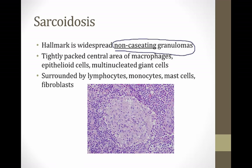Caseating or non-caseating is technically a description of the gross appearance in sarcoidosis, not the histologic appearance, although it's often used to mean that. In patients with sarcoidosis, you don't see necrotic tissue, which is what you do see in TB.